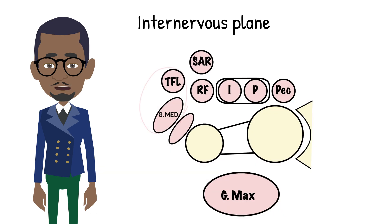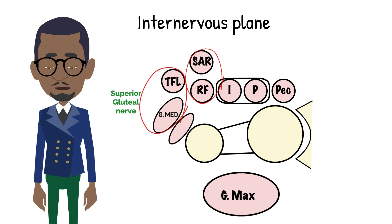The tensor fasciae latae and the gluteus medius are supplied by the superior gluteal nerve. The sartorius and rectus femoris are supplied by the femoral nerve.